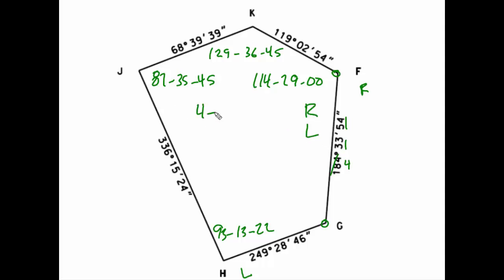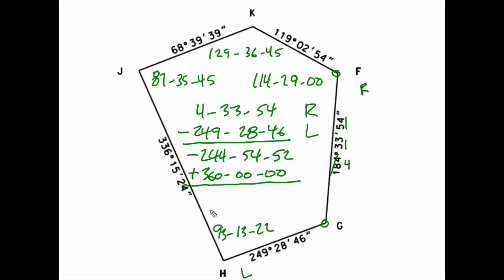I now have 4 degrees, 33 minutes, 54 seconds. And just as before, I'm going to subtract a large value, which will yield a negative number. I get negative 244, 54, 52. Well, as before, we will fix this because there is no such thing as a negative azimuth. I will add 360, and my final result will be 115, 05, 08.